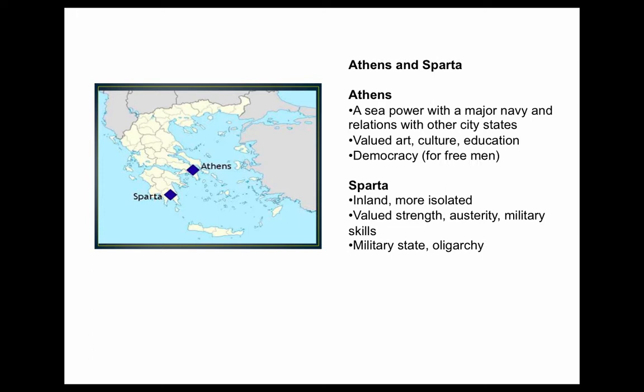When we talk about Greece, there are numerous independent city-states often at war with each other. The two most famous are Athens and Sparta. Athens was a sea power with a major navy, much larger than Sparta. Athens valued art, culture, and education and was often a democracy. Sparta, inland and more isolated, valued strength, austerity, and military skills. Every young man — and even women — received military training through most of their education. They were highly militaristic. Athens had the advantage of being far larger; Sparta had the advantage of being highly militaristic. Sparta eventually wins because a plague decimates Athens.